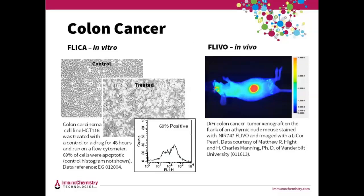Here's an example of labeling colon cancer cells. On the left, FLICA was used to label colon carcinoma cell line HCT116. These cells were seated on a plate, exposed to a drug for 48 hours, then labeled with FAM FLICA for one hour, and then trypsinized. When analyzed with the flow cytometer, 69% of the cells were apoptotic compared to the control. Using FLIVO on the right, a DiFi tumor xenograft — another colorectal cancer cell line — was grown on the flank of an athymic nude mouse and imaged with our near-infrared FLIVO 747 on a LI-COR Pearl small animal imager using the 800 channel.